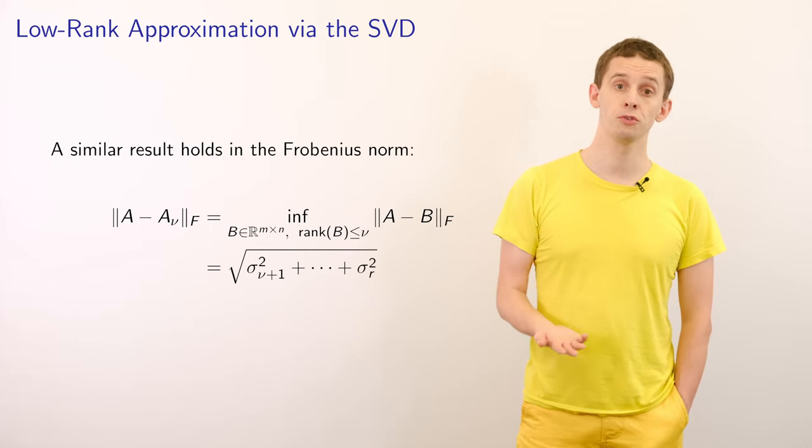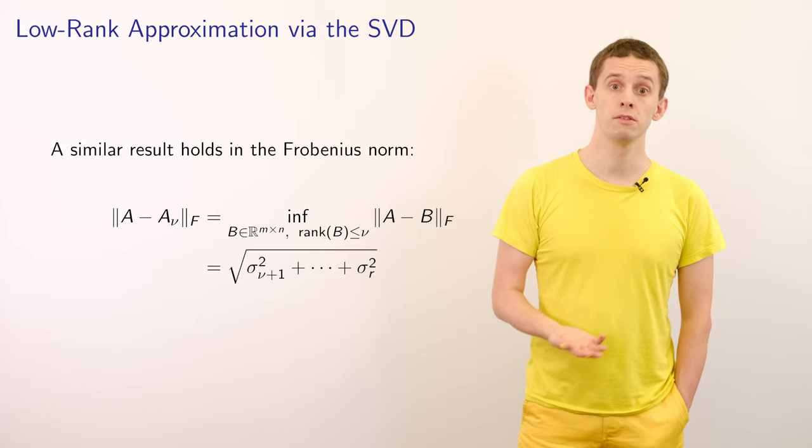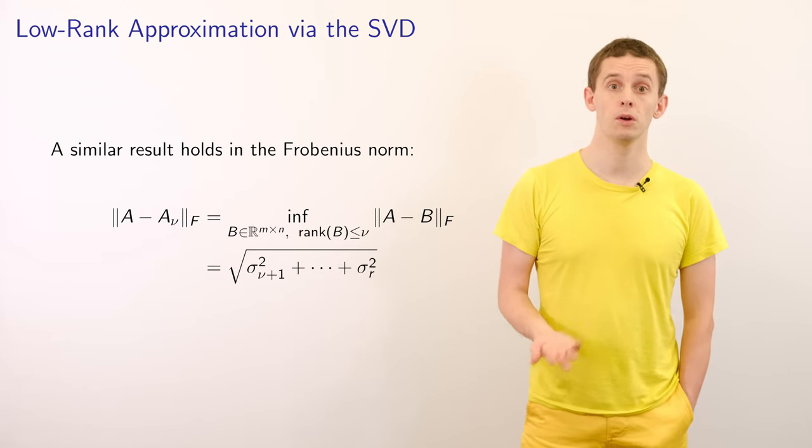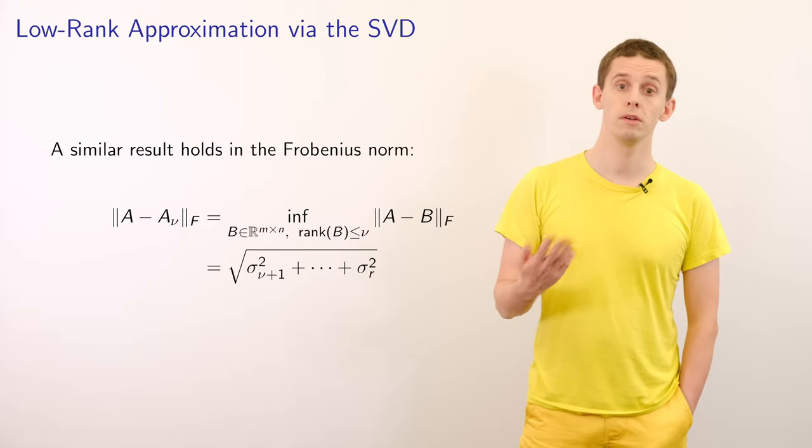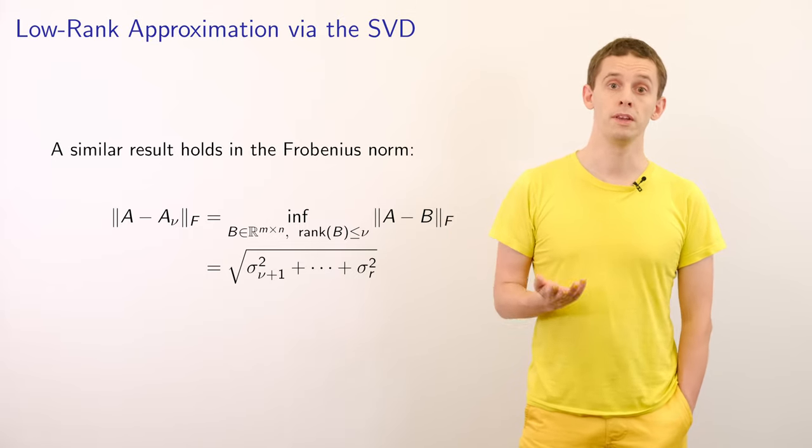And a similar result actually holds for the Frobenius norm. We find that the same matrix A nu also minimizes the difference between A and A nu. But in this case, the value of that minimum